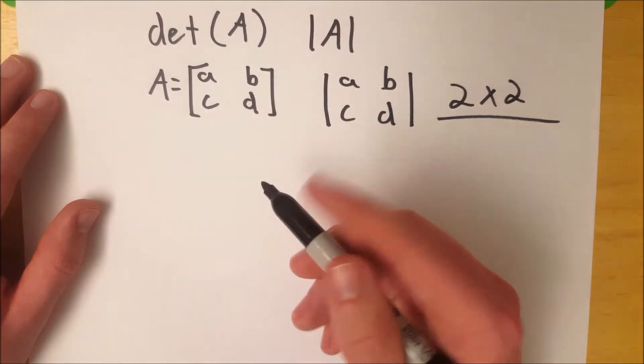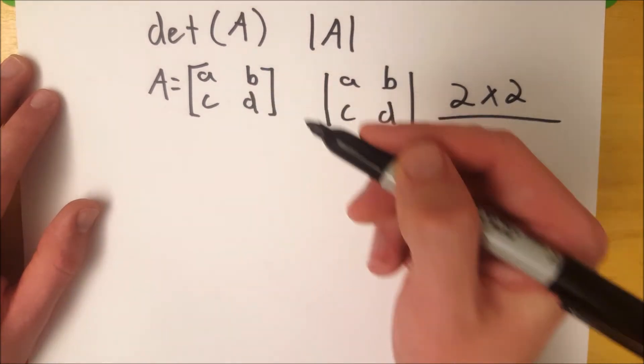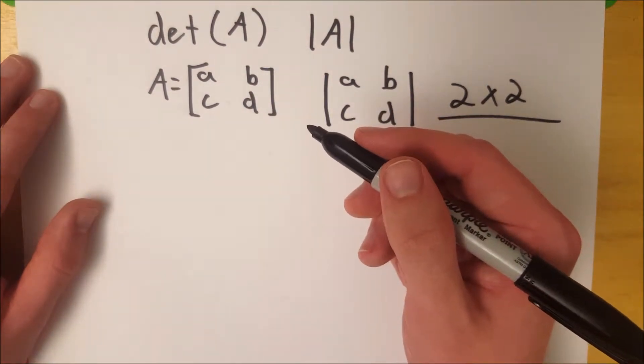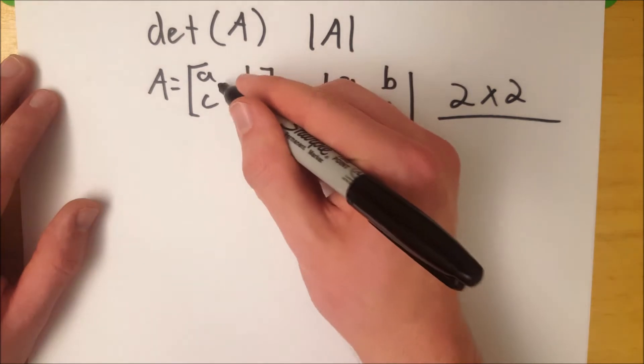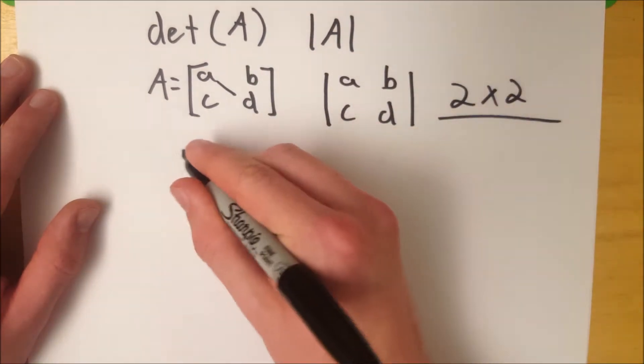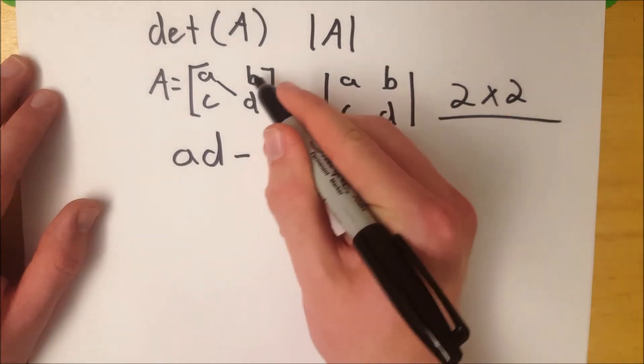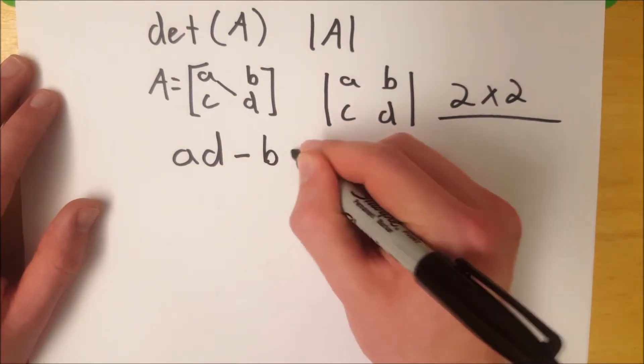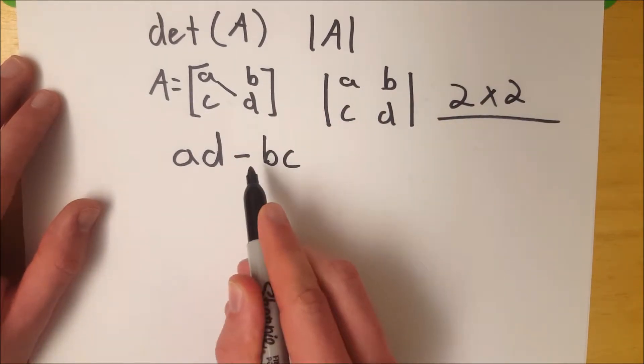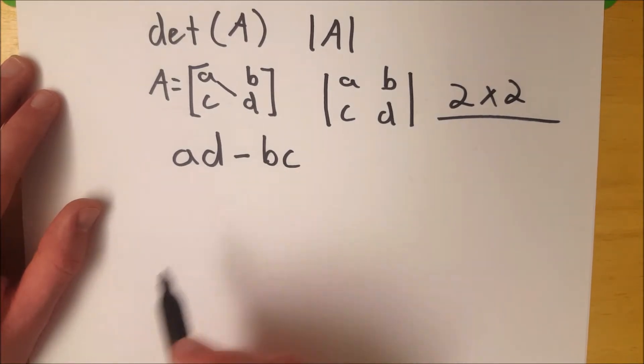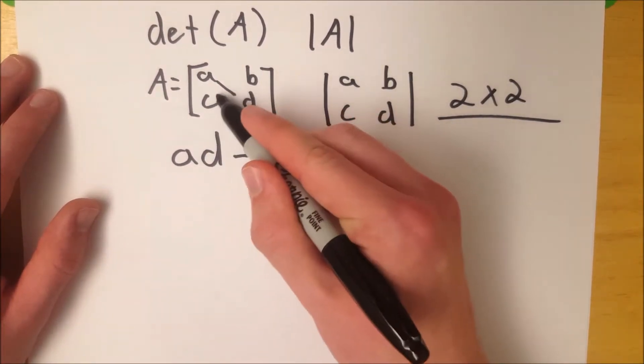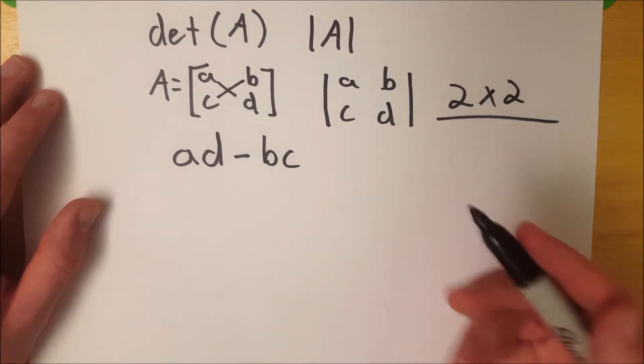So let's say we want to find the determinant of A. Well, it's pretty easy. It's the difference of the products of the diagonal entries. So we're going to take A times D, that's AD, and from it, subtract B times C. So you can see it's the difference of the products of the diagonal entries, A times D minus B times C.